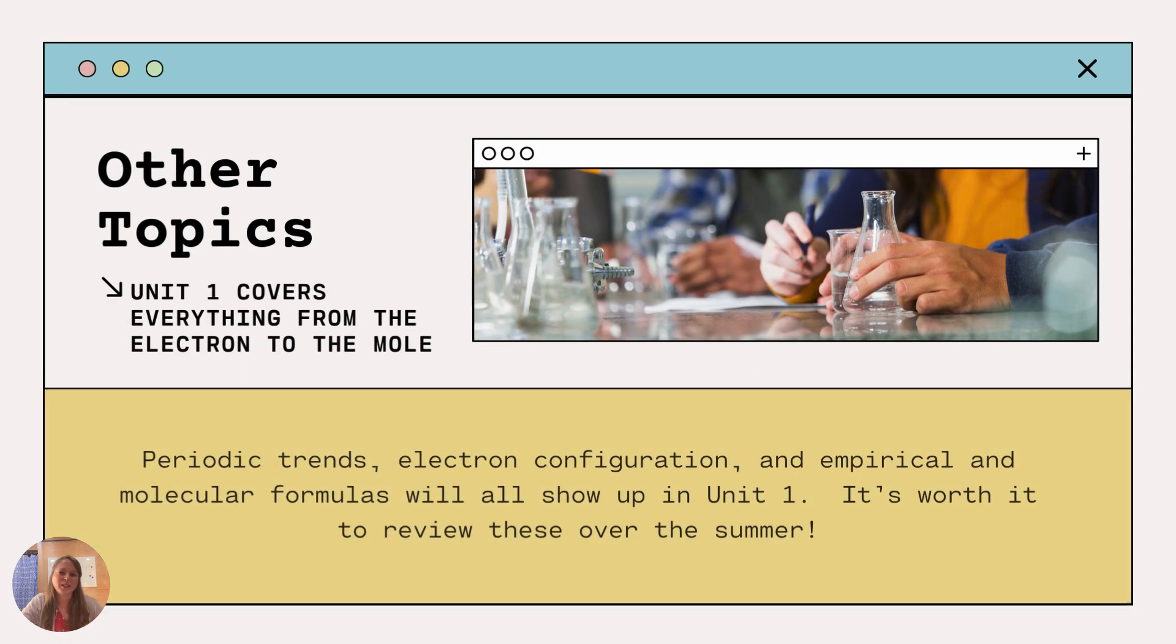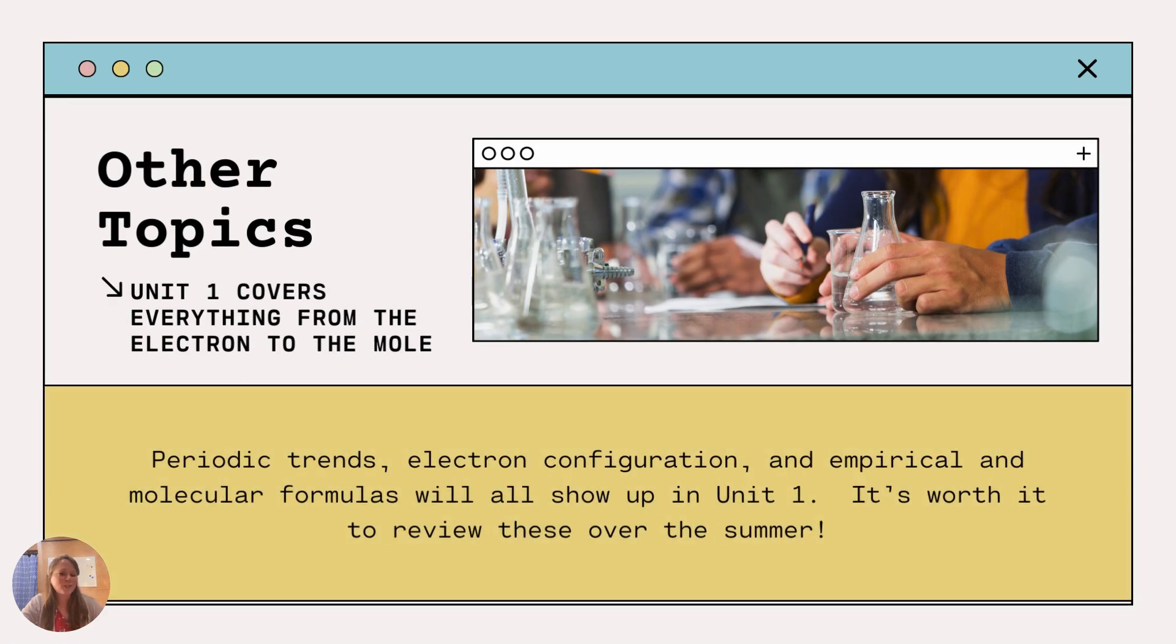Other topics that you're going to see, unit 1 is going to cover everything from the electron to the mole. So know periodic trends, electron configuration, and empirical and molecular formulas. You will see all of this. And one thing that intimidates students about AP chemistry is that a lot of times you're going to walk in on week 1 and boom, you have a test on everything that you covered in chem 1. So maybe you took it as a sophomore, and as a sophomore, you weren't paying attention. You didn't even know how to study back then. So it's okay if you've forgotten a lot of this. But spend some time now going through it, and that's going to benefit you tremendously.